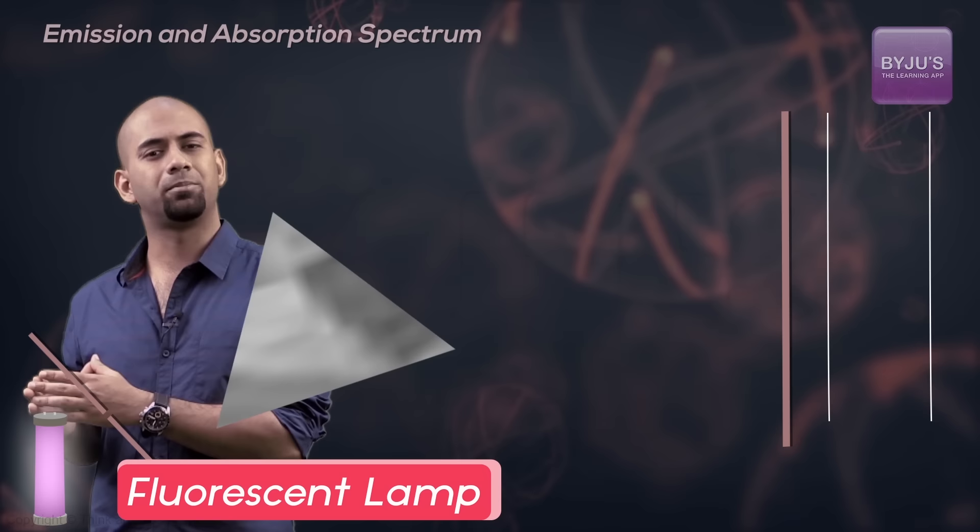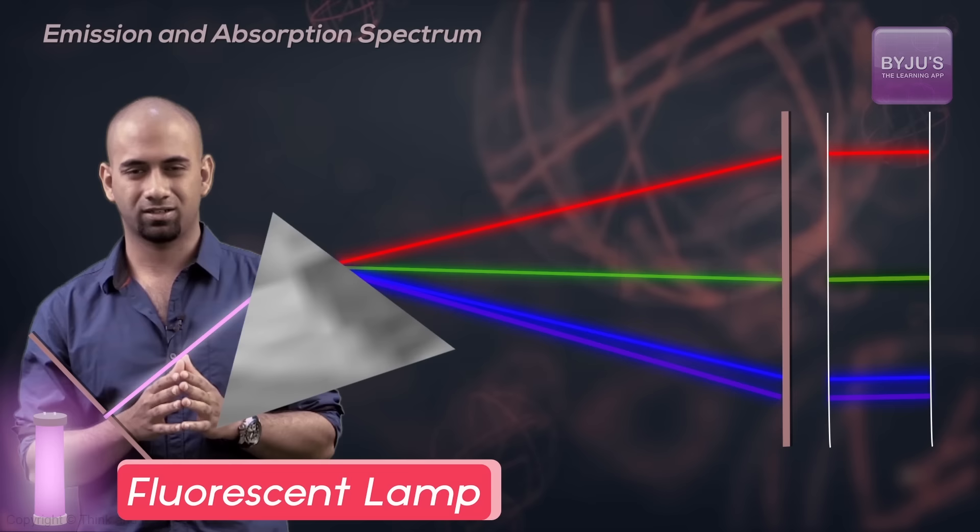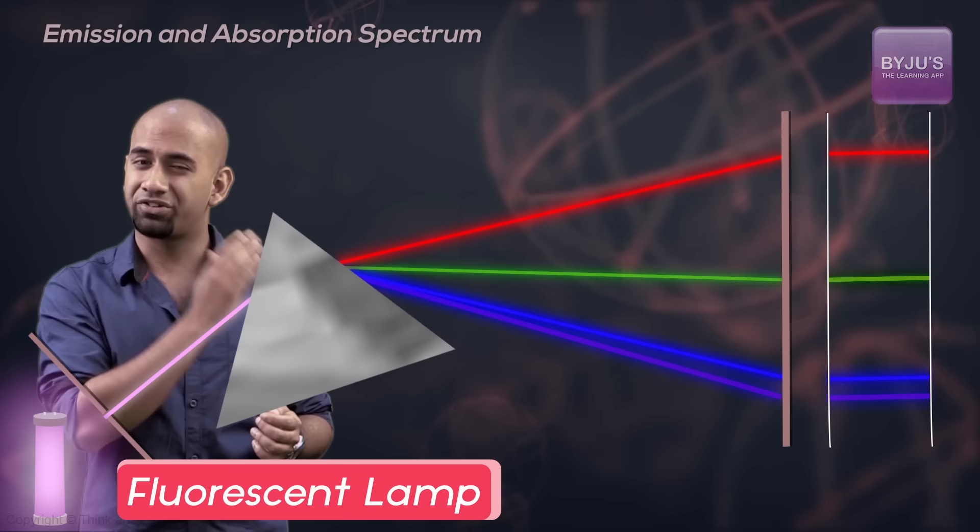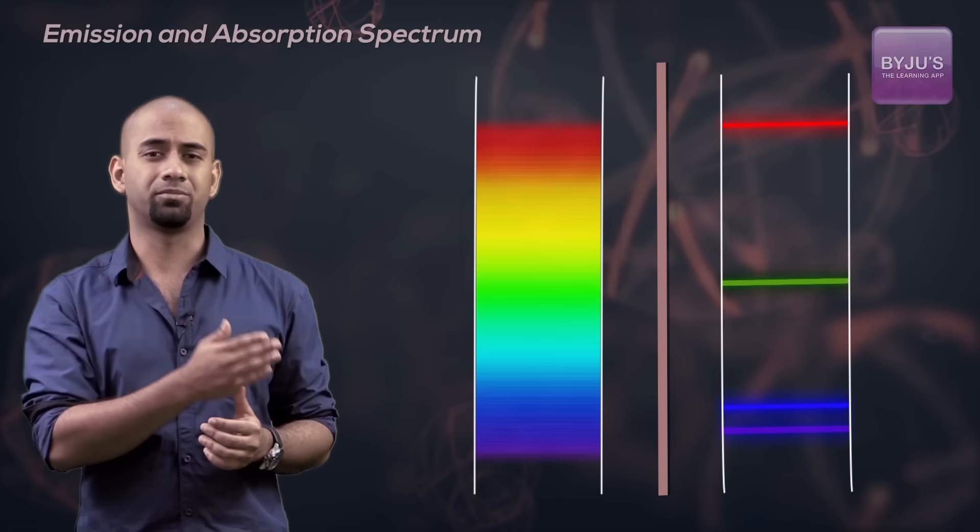Now if I change the source to a fluorescent lamp or a mercury vapor lamp and then perform the same experiment, I find something very different. On the screen I find only certain wavelengths or certain colors, but in the previous case I found a continuous spectrum of wavelengths or colors.